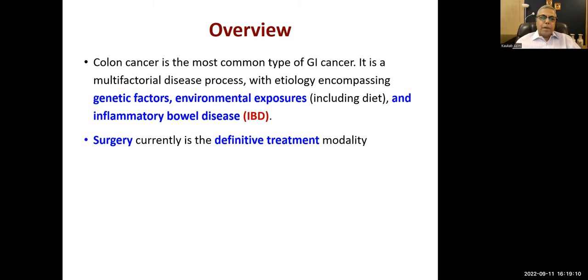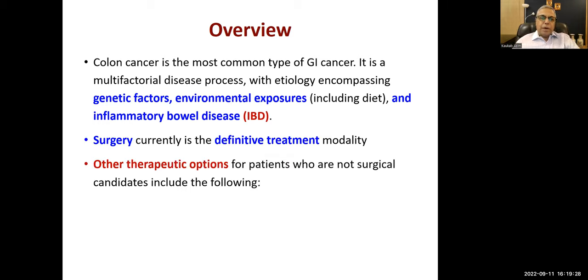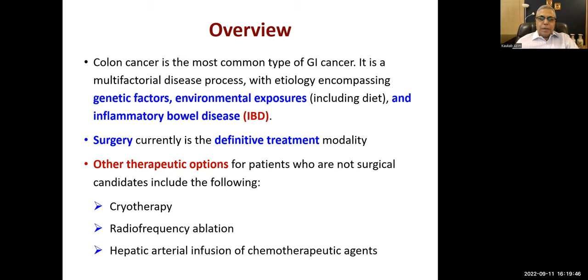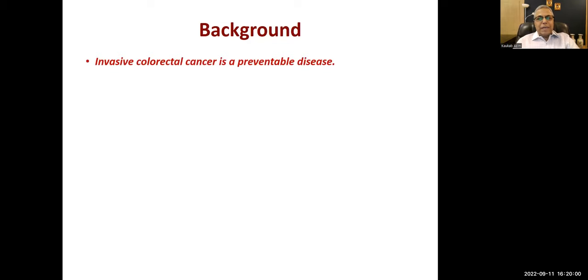A high fiber diet actually protects against colorectal cancer. Surgery is currently the definitive treatment modality, done in certain stages for localized disease, and the prognosis is much better than lung cancer. We have other therapeutic options for those who are not surgical candidates, including cryotherapy, radiofrequency ablation, hepatic arterial infusion of chemotherapeutic agents, or chemotherapy through normal routes via a port or catheter.